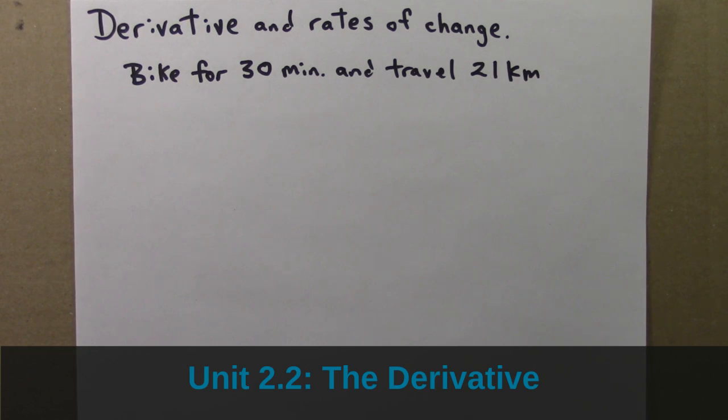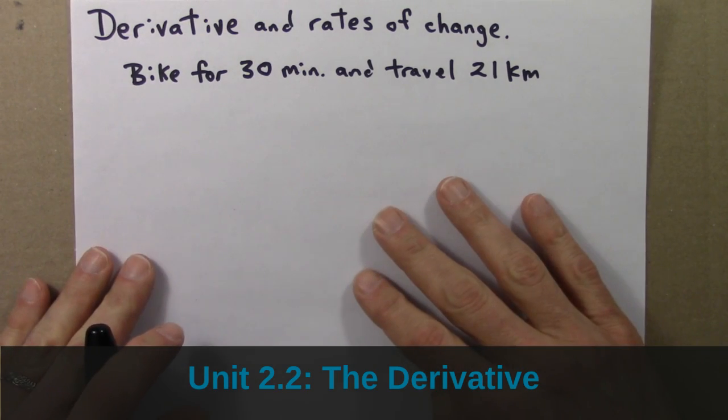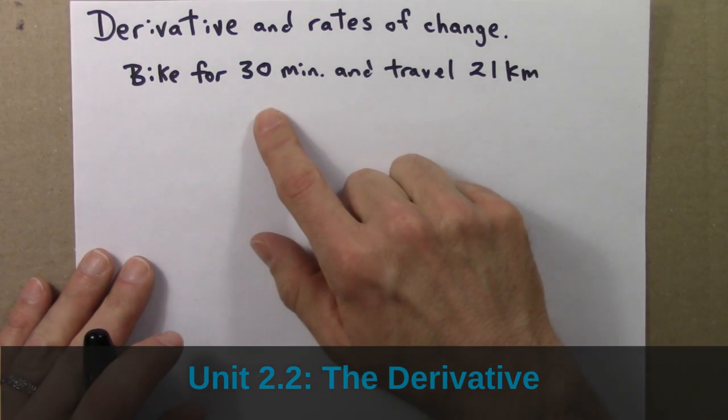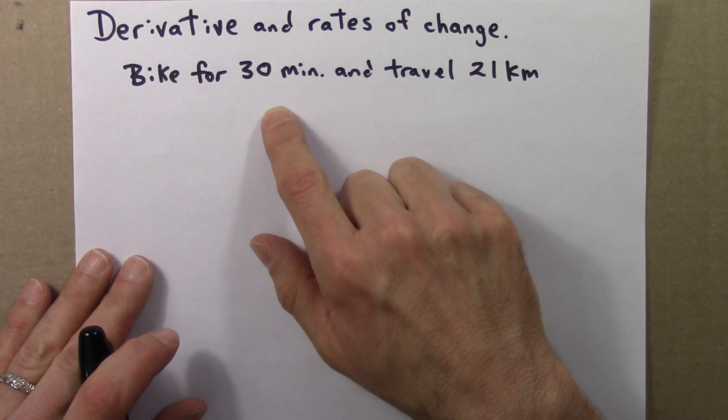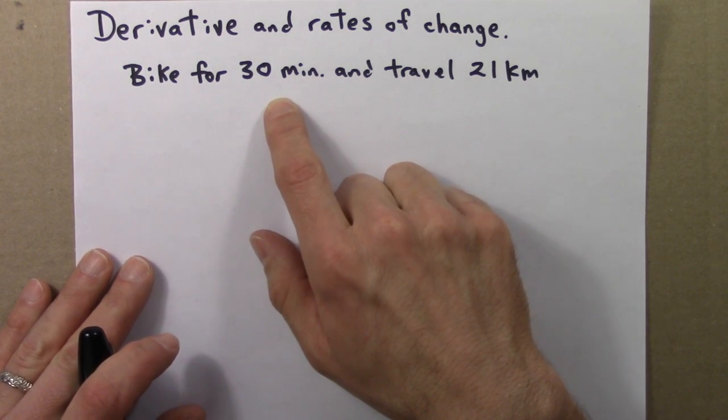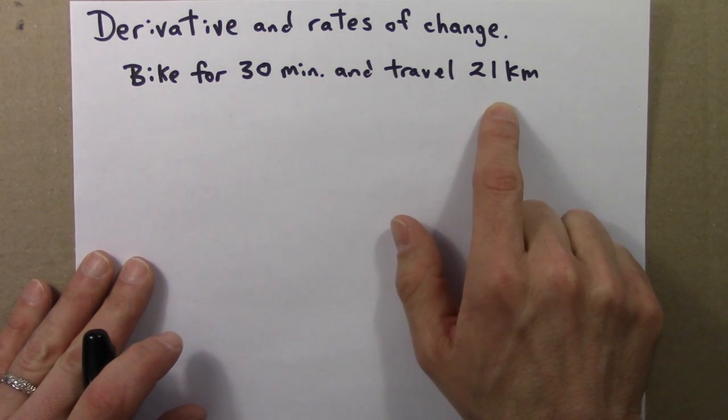So, we'll start by thinking about rates of change. As an example, suppose you take a bicycle ride for 30 minutes, and at the end of those 30 minutes, you've traveled 21 kilometers.